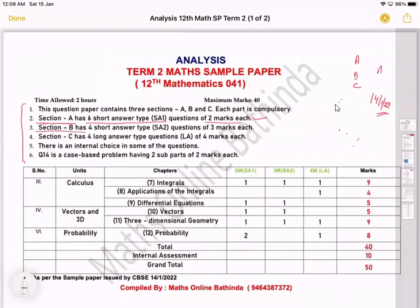Now, if I come to Section 2, or I can say Section B, it will contain four short answer type questions.